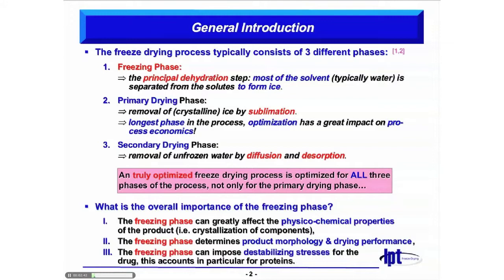The secondary drying phase is the removal of unfrozen water by diffusion and desorption. It's important to note that a truly optimized freeze-drying process is optimized for all three phases of the process, and not only for the primary drying phase, which is typically done in our laboratories.